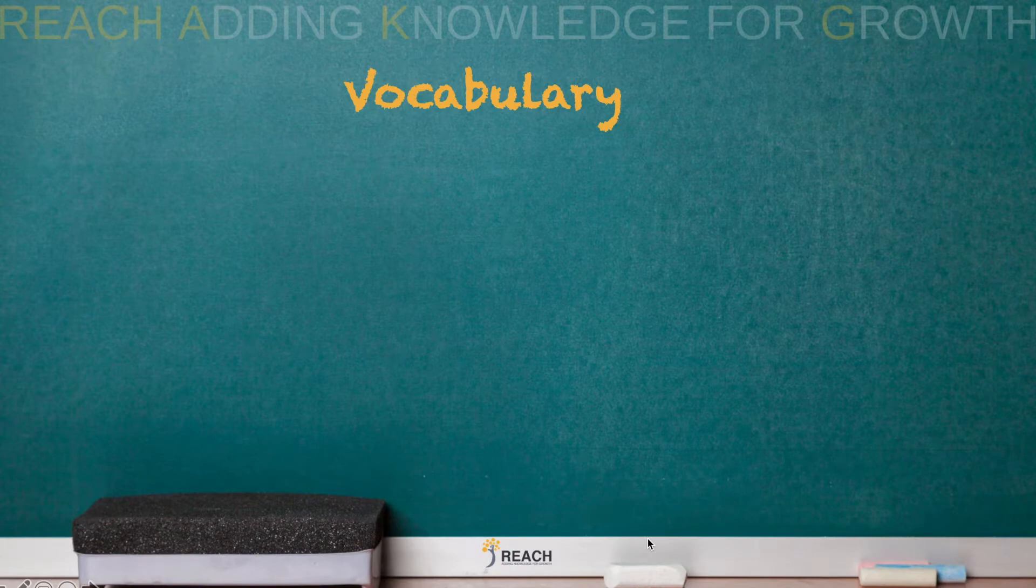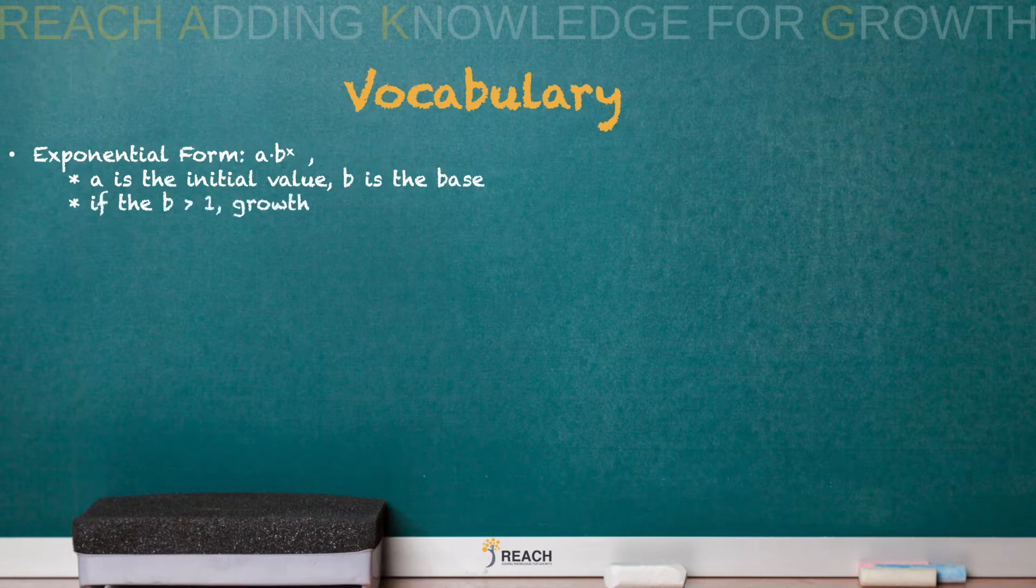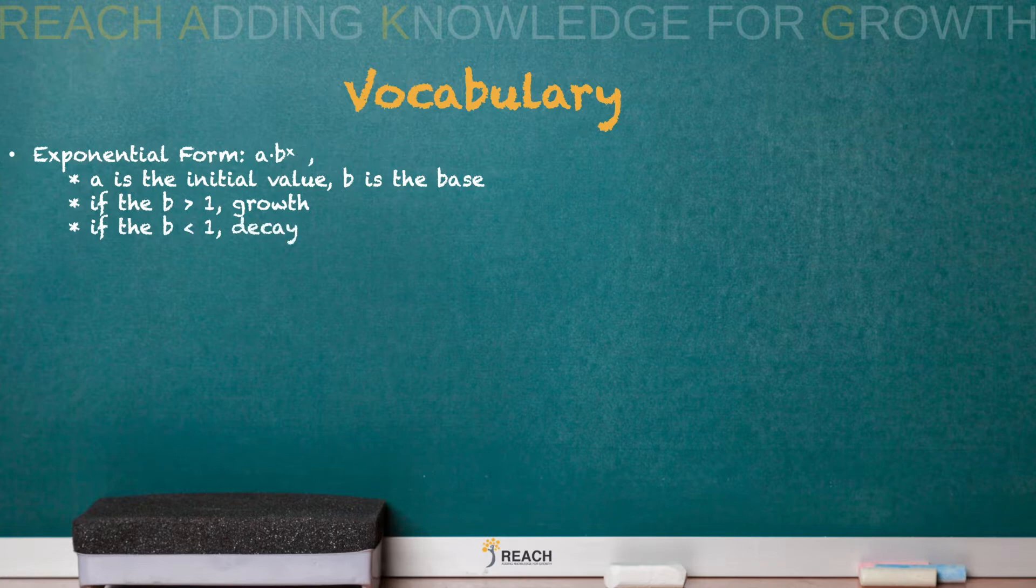Okay, let's check out some key vocabulary. Exponential form, this is your general form a times b to the x. A is your initial value, B is your base. If the base is greater than 1 we call it a growth function. If your base is less than 1 we call it a decay function.